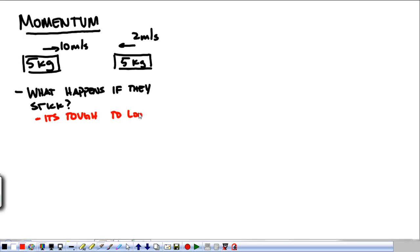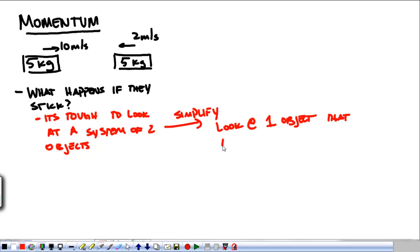It's tough to look at a system of two objects. That's a lot going on, so it would be easier if we could simplify it, or if we could look at one object that represents two objects.